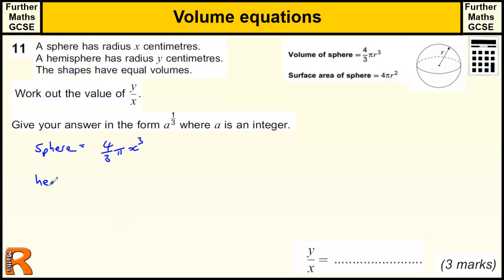The hemisphere is going to be a half of 4 thirds pi y cubed, because this time the radius is y. Now a half of 4 thirds pi y cubed, well that's just a half of 4 thirds which is 2 thirds pi y cubed.